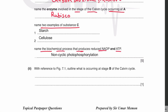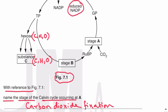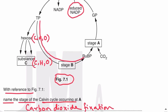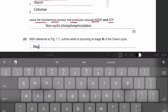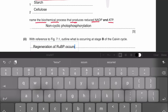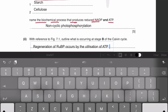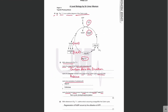With reference to figure 7.1, outline what is occurring at stage B of the Calvin cycle. At stage B, TP is being converted to RuBP, and this is called regeneration of RuBP. Regeneration of RuBP occurs by the utilization of ATP. Always remember that regeneration of RuBP requires ATP.